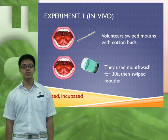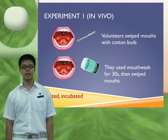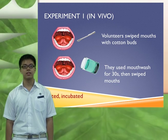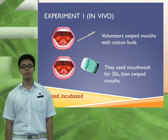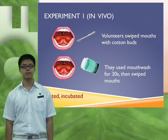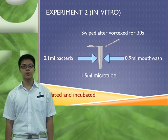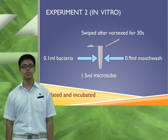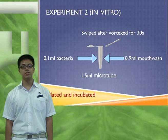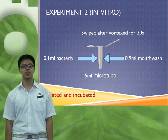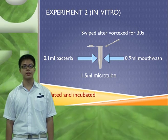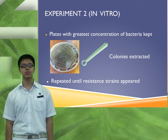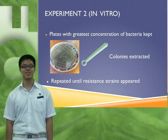During the in vivo test, volunteers were instructed to swipe their mouths with a cotton bud. After using a mouthwash for 30 seconds, they swiped their mouths again. The cotton buds were then used to swipe LB agar plates, which were then incubated. For the in vitro test, 0.1 ml of bacterial culture was vortexed with 0.9 ml of mouthwash in a microtube. The internal surfaces of the microtube were then swiped with a cotton bud, which was then used to streak LB agar plates. After incubation, bacterial colonies were extracted from the plate with the greatest concentration of bacteria and were cultured in LB broth overnight. The cycle was then repeated.